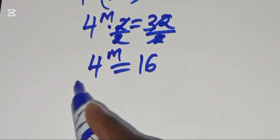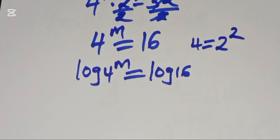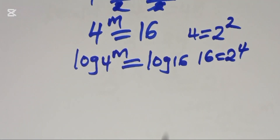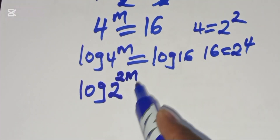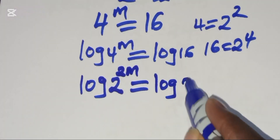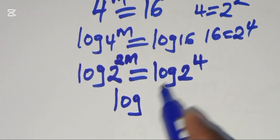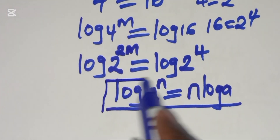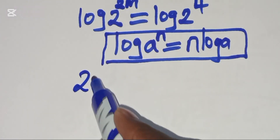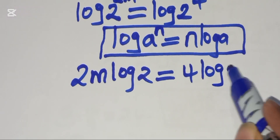Taking the log of both sides: log of 4^m equals log of 16. We express 4 as 2^2 and 16 as 2^4, so we get log of (2^2)^m equals log of 2^4, which simplifies to log 2^(2m) equals log 2^4. Applying the logarithm identity — log(a^n) equals n times log a — we get 2m times log 2 equals 4 times log 2.